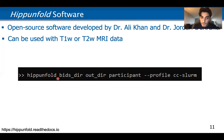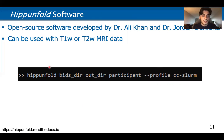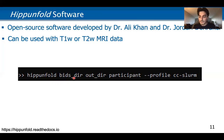You just call HipUnfold, give it your BIDS-formatted data, give it the directory where you want results outputted, and specify that you want it run across all participants in your BIDS directory — or you can run it across single participants if you'd like. This sets up a Snakemake profile with HipUnfold, and once this command is run, HipUnfold outputs will be generated for all the data in your BIDS directory across all participants. It's very simple to run.